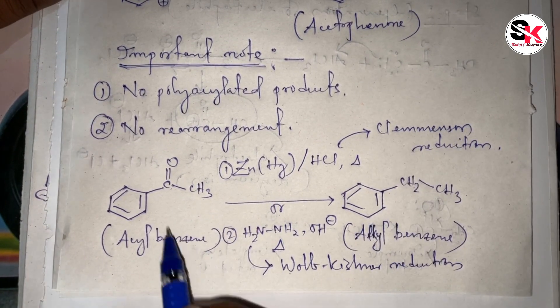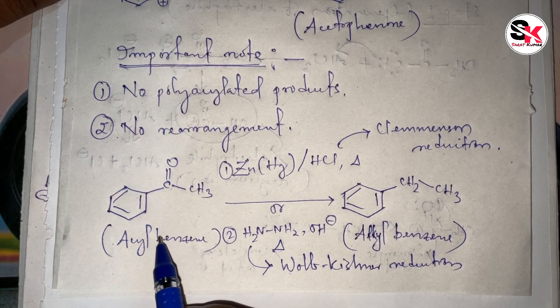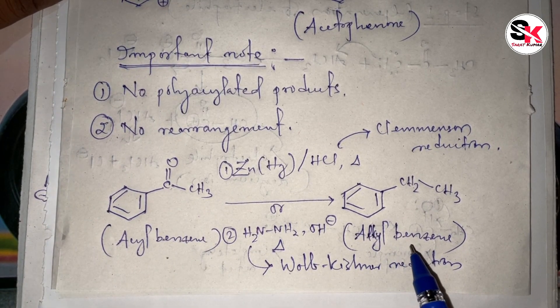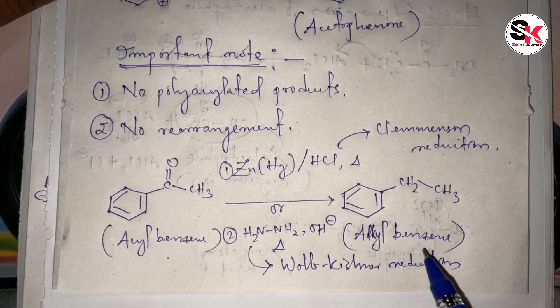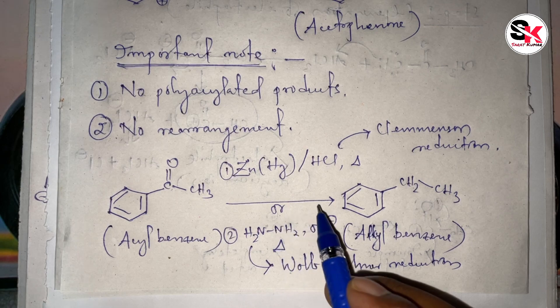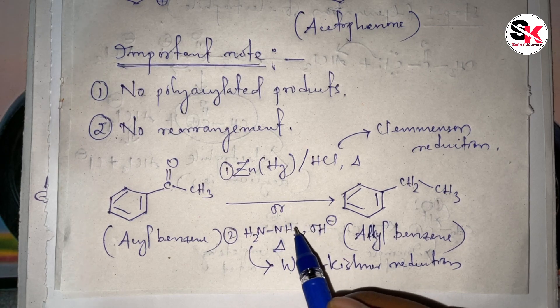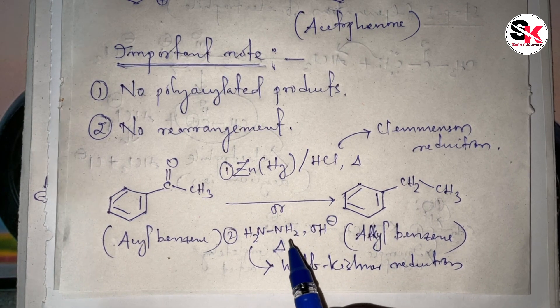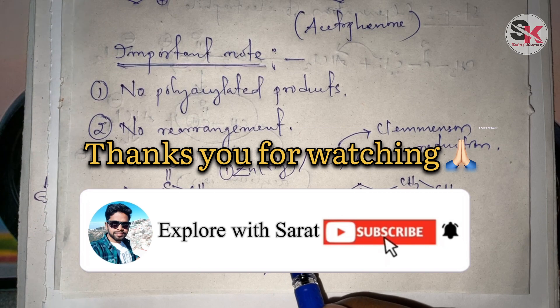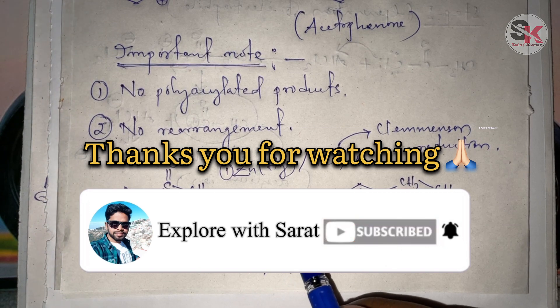So this is how you can convert acyl benzene to alkyl benzene. This is all about Friedel-Craft acylation reaction. Stay tuned for more videos, thank you.